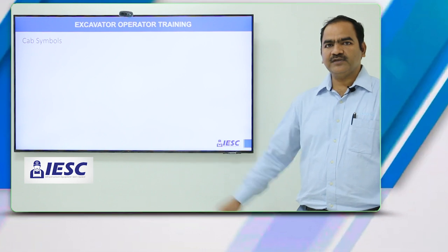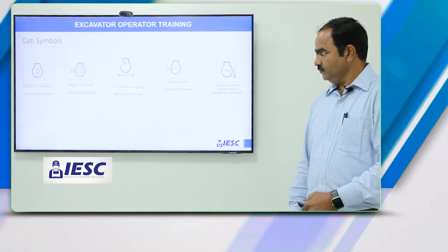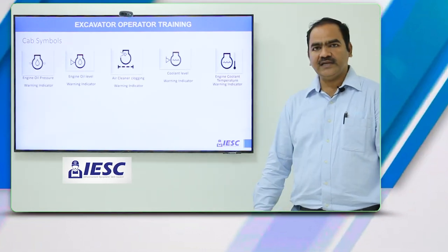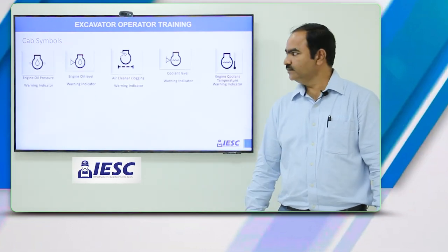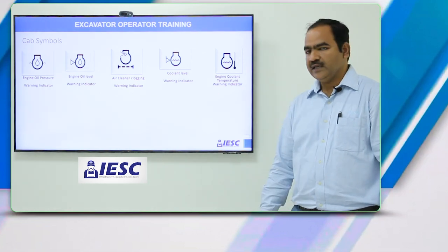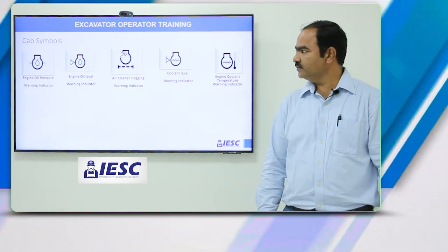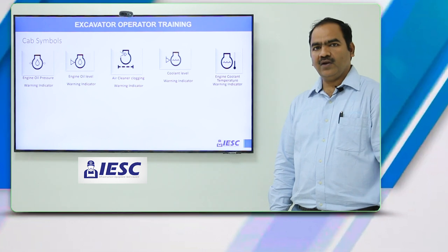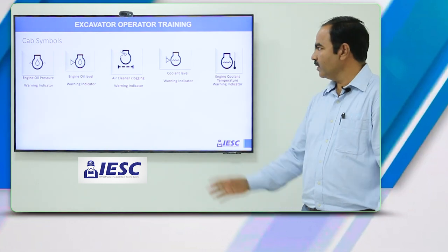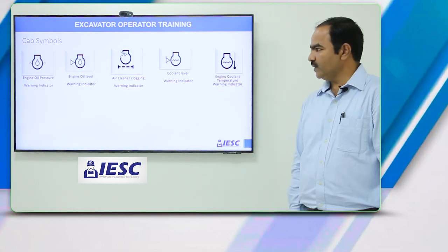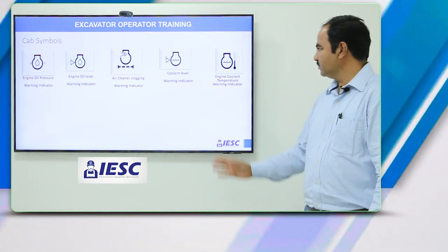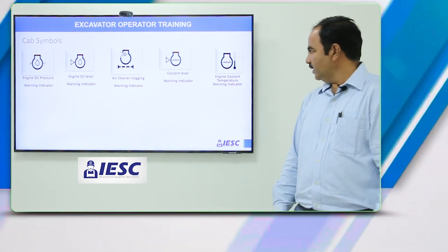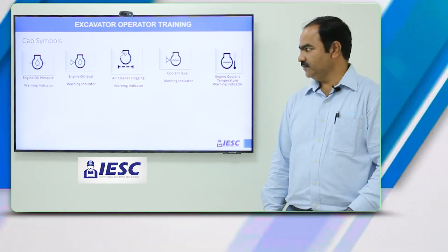Cap symbols: the first one is engine oil pressure, the second one is engine oil level, the third one is air cleaner, the fourth one is coolant level, and the fifth one is engine coolant temperature.